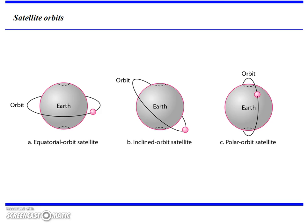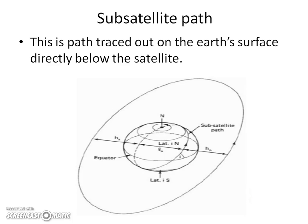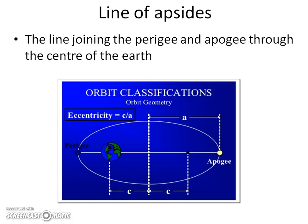You can see the different orbits of satellites: equatorial orbit, inclined orbit, and polar orbit. Subsatellite path is the path traced out on the earth's surface directly below the satellite — the line drawn on the earth that the satellite traces is called the subsatellite path. Line of apsides is the line joining the perigee and apogee through the center of the earth.